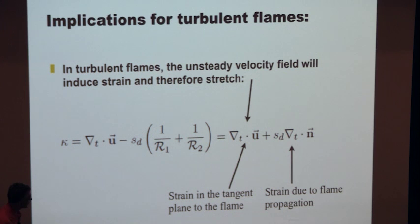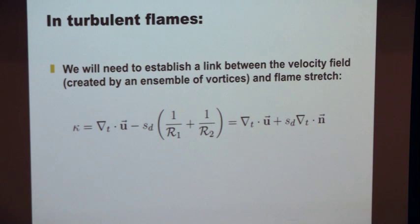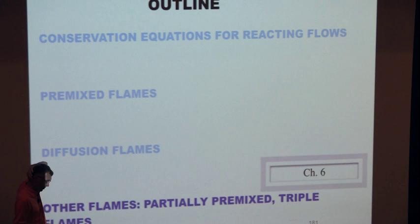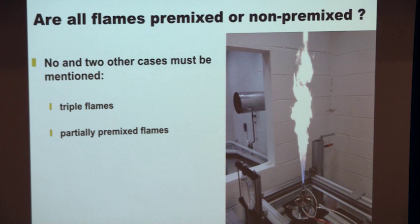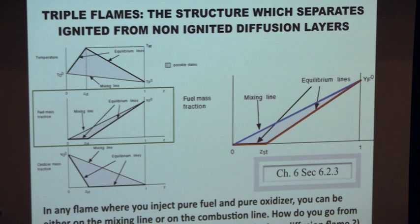Before starting turbulent flames, an important question is whether there are other flames beyond perfectly premixed and perfectly non-premixed cases. I want to mention two: triple flames and partially premixed flames. Here at the bottom is an example of triple flames. In a diffusion flame there are two states: states where things just mix, and states where things have burned with infinitely fast chemistry. An interesting question is: how do you go from one to the other? How do you separate the mixing lines from the ignited points?